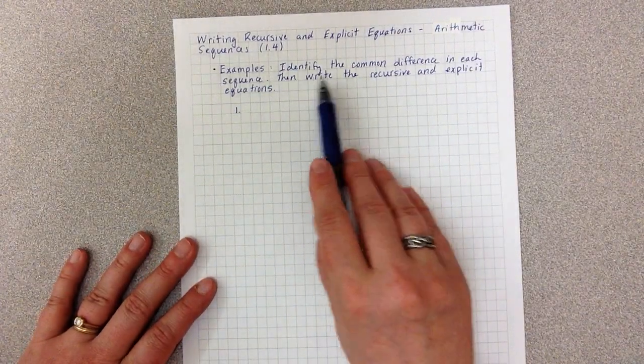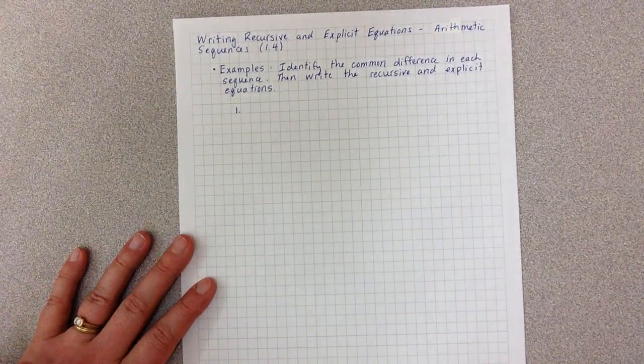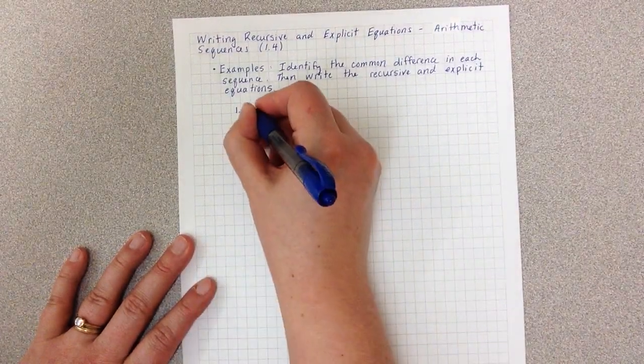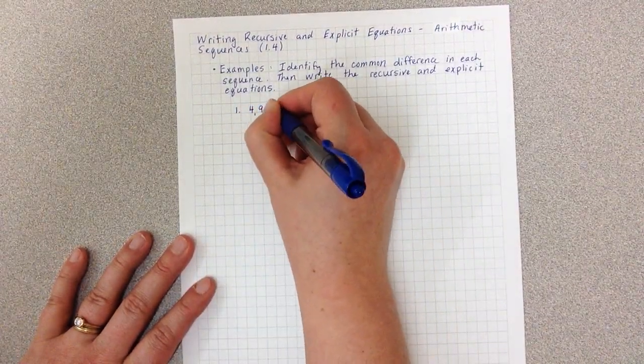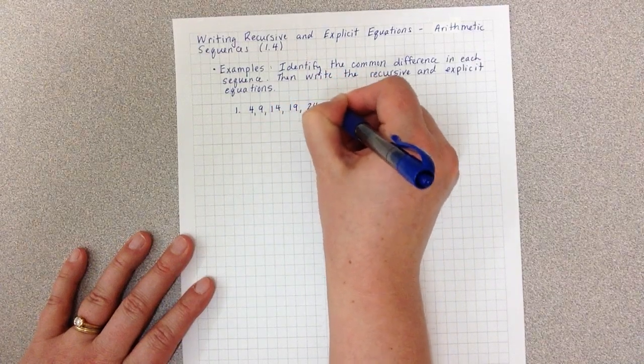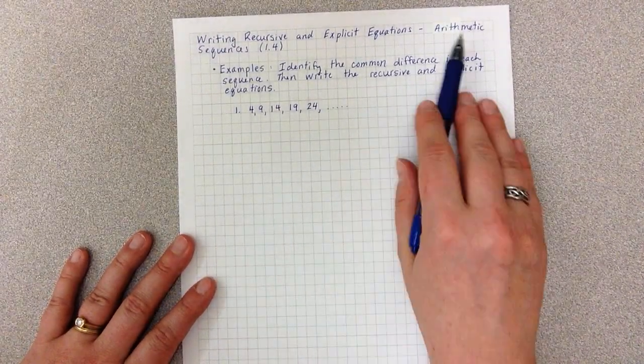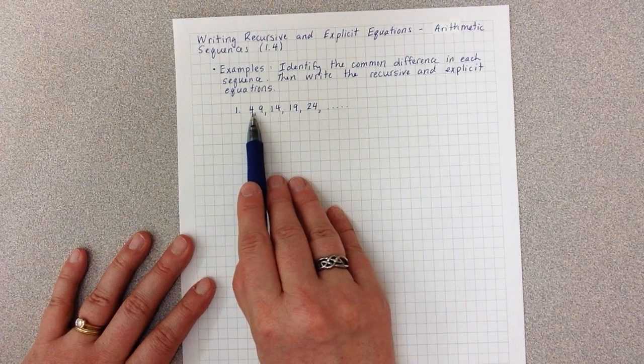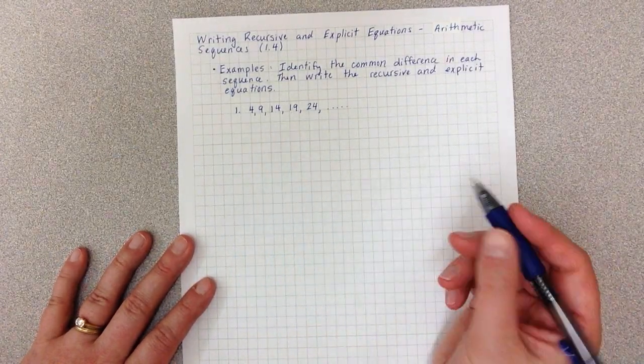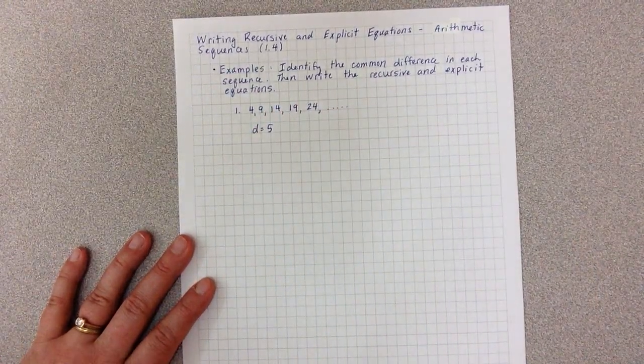The directions are identify the common difference in each sequence, then write the recursive and explicit equations. In our first example, we have 4, 9, 14, 19, 24, etc. We can see that this is arithmetic. To go from 4 to 9, 9 to 14, and 14 to 19, I'm adding five each time. So we say that our common difference D is five.